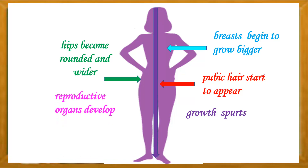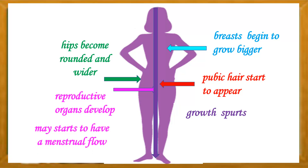The reproductive organs also develop. By this time, the ovaries develop one matured egg cell every month, and girls may start to have a menstrual flow. The first menstrual flow is called menarche.